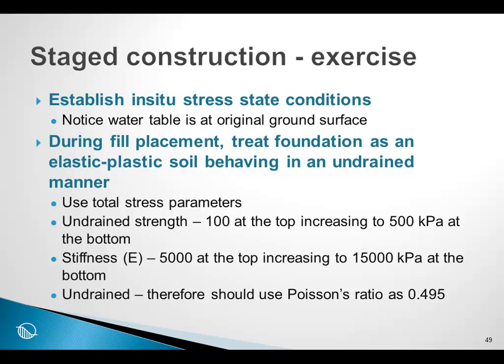The undrained strength will vary from 100 kPa at the top of the layer and increase linearly to 500 kPa at the bottom. The stiffness will be 5,000 kPa at the top, increasing to 15,000 kPa at the bottom. During construction, we are going to treat the soil as behaving in an undrained manner. Since the soil is below the water table, it is fully saturated. In an undrained, fully saturated soil, when a load is placed, the change in stress in the vertical direction will be the same as in the horizontal direction — water is incompressible and most of the load goes into the water. To simulate this behavior, we need to specify Poisson's ratio as 0.495, the largest value permissible in Sigma W.